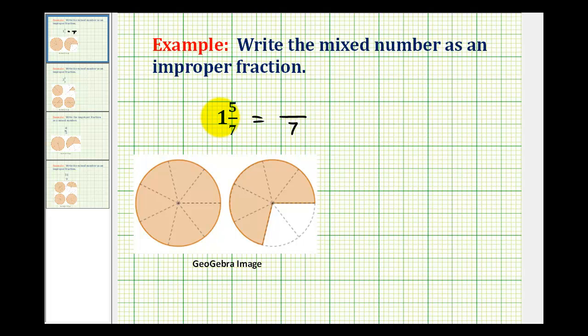So we have seven times one, that's seven, plus five, equals twelve. One and five-sevenths is equal to twelve-sevenths.